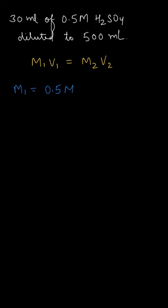So V1 is 30 ml. Now M2 we have to calculate when it is diluted to 500 ml. So the volume would be 500 ml.